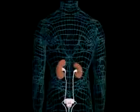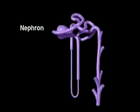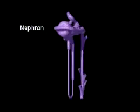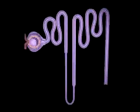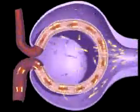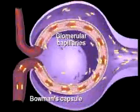Kidneys are bean-shaped organs which filter blood to regulate levels of waste, water, and salt in body fluids. The nephron is the kidney's functional unit. In its first section, the renal corpuscle, filtration occurs as fluid and small molecules in blood are filtered from glomerular capillaries.